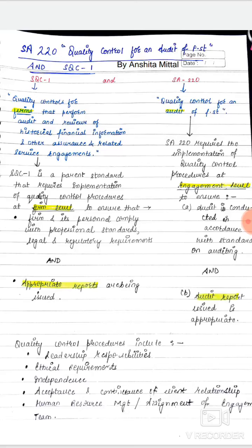We will cover all these points in detail — separately for SQC1 as well as SA220. Then comes human resource management, assignment of engagement team, and after that engagement performance, which can relate to direction, supervision of work, review of work, consultation, difference of opinion, engagement quality control review, and documentation. And lastly, monitoring is very important — if you are not monitoring what is being done, your planning has no value.